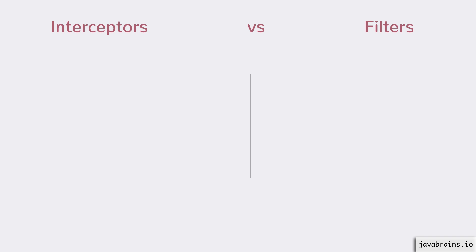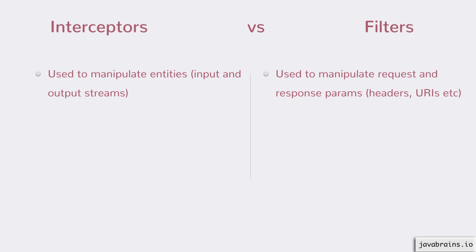Now let's talk about the difference between filters and interceptors. Interceptors are used to manipulate the entities, while filters are used to manipulate the request and response parameters — like the headers, URIs, and all that stuff.